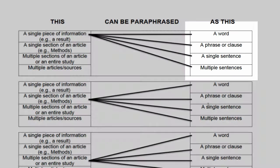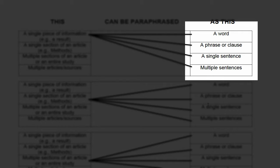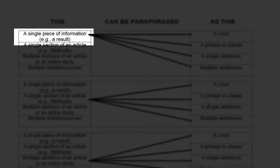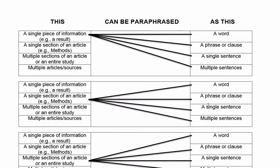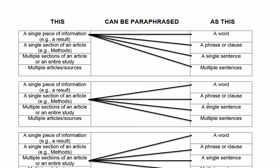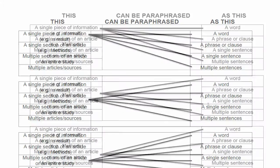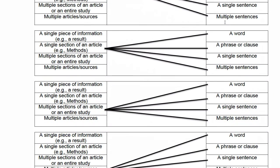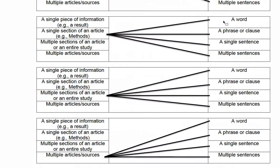A similar spectrum exists on the right-hand side of the diagram, except these lengths represent the length of the paraphrase, starting at a single word, moving to a phrase or clause, a single sentence, and multiple sentences. In the middle, lines travel from one type of source usage to all four lengths. At the top, notice the text: all lengths of source information can be paraphrased — lines travel to all options — as any length of paraphrase. This represents that each type or length of source information can be paraphrased as each type or length of paraphrase.